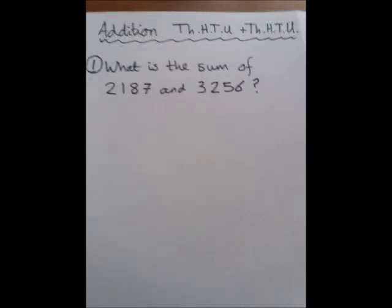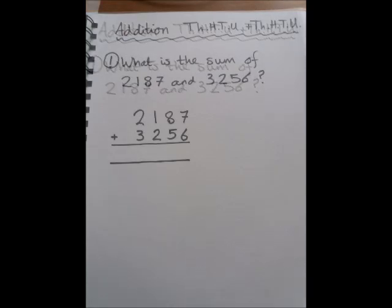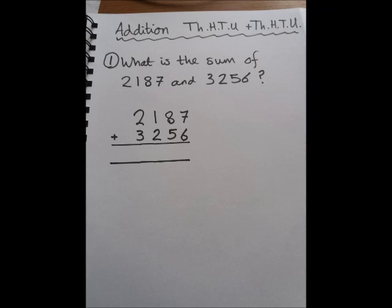So the first question is, what is the sum of 2187 and 3256? First thing you've got to do is make sure you write it out correctly, make sure that place value is correct, and then do the two lines with a ruler.